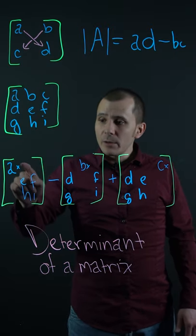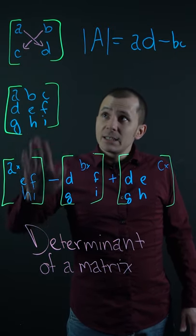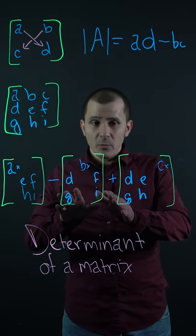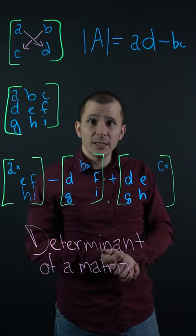For a 3x3, we're going to take A times the same process here, so E I F H. The same for B and C, and that's pretty much it.